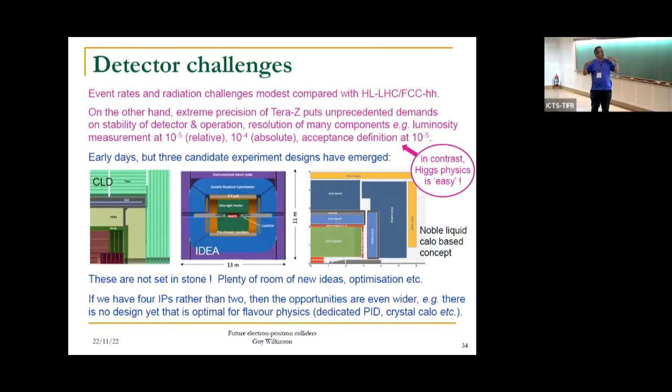If you go to the CDR, you will see a design for FCC with two interaction points. I think we will not remain with this. I think we will end up with four. There are many advantages with having four. Not least, you will have opportunity for many more diverse detector designs to pinpoint different areas of physics. There's no detector optimal for flavor physics with dedicated PID or crystal calorimeter, for example. This is an area where involvement would be very welcome.